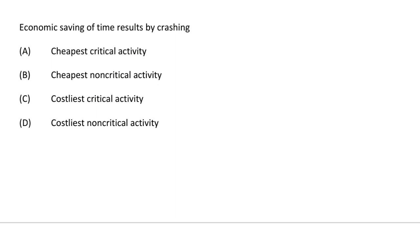Next question: economic saving of time results by crashing the — option A cheapest critical activity, option B cheapest non-critical activity, option C costliest critical activity, option D costliest non-critical activity. The correct answer is option A, cheapest critical activity. We will see the next video — thank you.